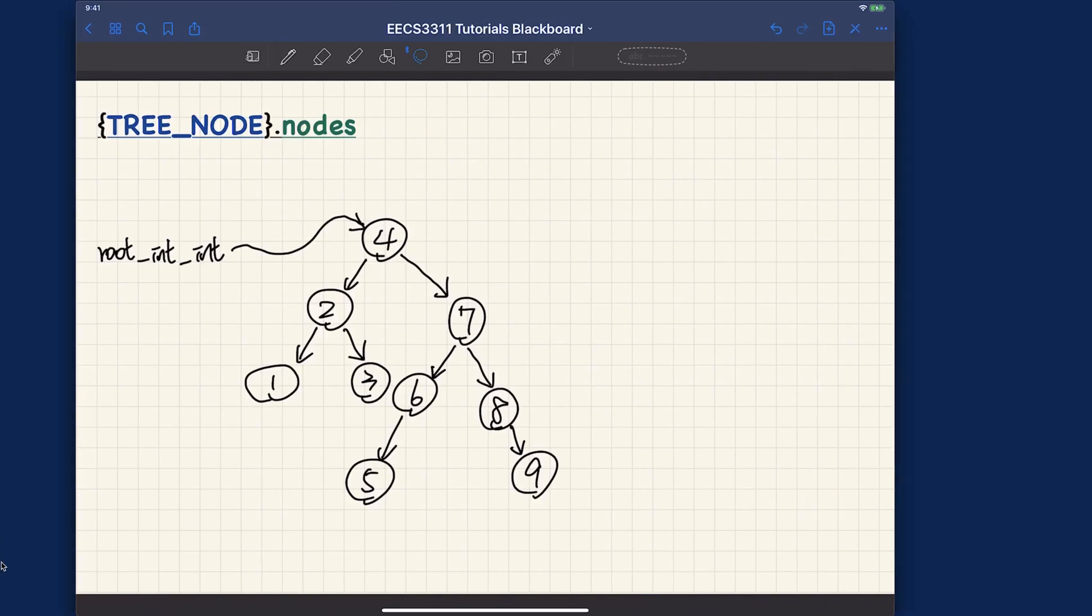Let's just do one example very quickly. So if I want to do an in-order traversal starting from the root over here, what I need to do is I need to do the in-order traversal for its left subtree over here, and then whatever the in-order traversal of this is followed by 4. And then it's going to be also followed by the in-order traversal of its right subtree.